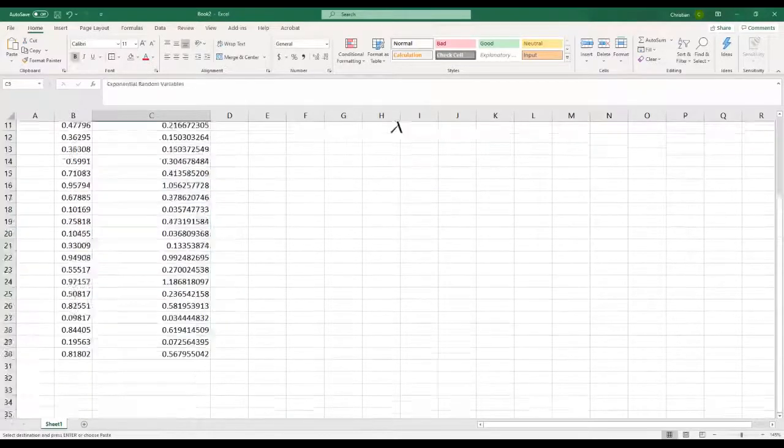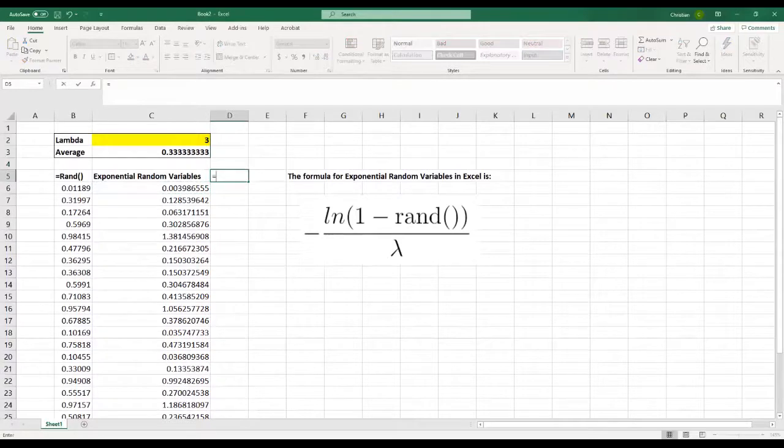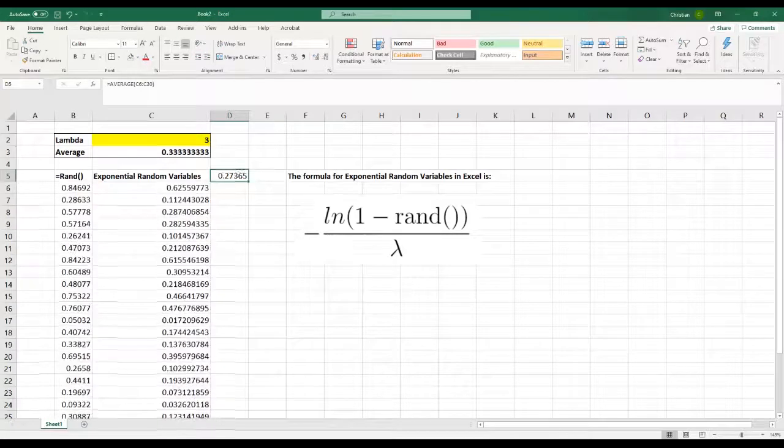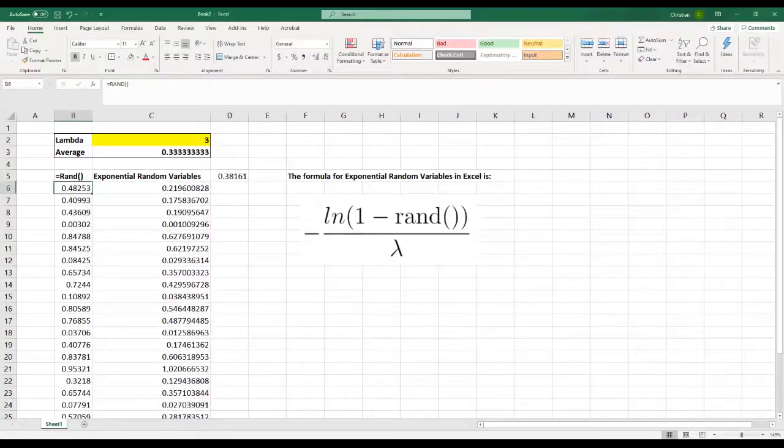You can pull it down and just as a sort of sanity check, you can calculate the average over what you just produced. And it's close enough here. If you randomize this a couple of times, you're pretty close to the average.